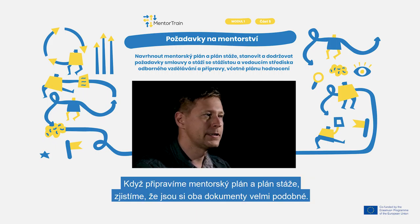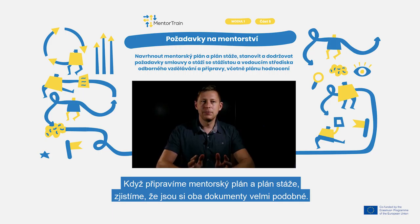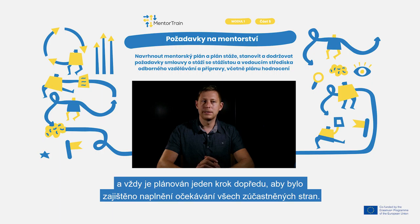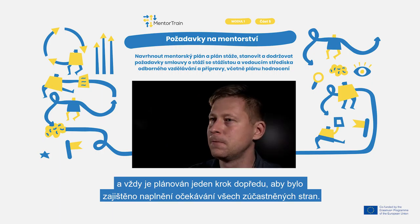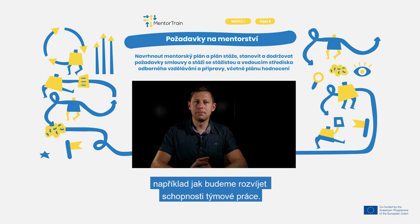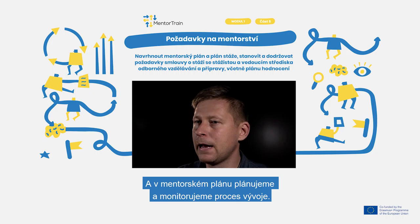When we prepare our mentoring plan and apprenticeship plan, we will see that both documents are similar. The main difference is that the mentoring plan is looking at the apprenticeship from the side of the company, and it's planned always one step ahead to be sure that we fulfill the expectations of all parties. In the mentoring plan, we clearly write down the learning outcomes in connection with different tasks — for example, how we will develop teamwork capabilities — and we plan and monitor the development process.